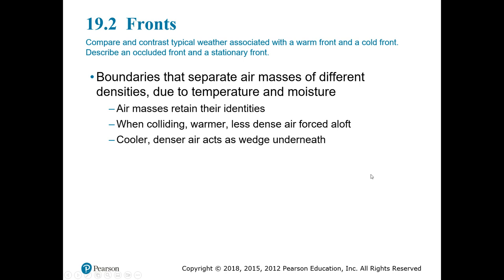Section 19.2 talks about the boundary that separates different air masses. Those air masses have different densities, temperatures, and moisture content. The air masses will retain their identities, but when they collide, there's going to be some kind of interplay between them. The important thing to remember is that cold air is more dense than warm air — a very important concept for this entire chapter. Cold air is like a plow; it's going to plow through warm air and force it upwards, since warm air is less dense and will rise.